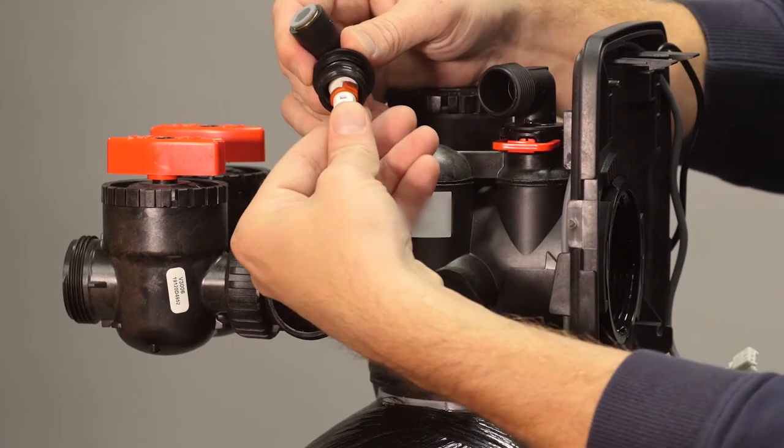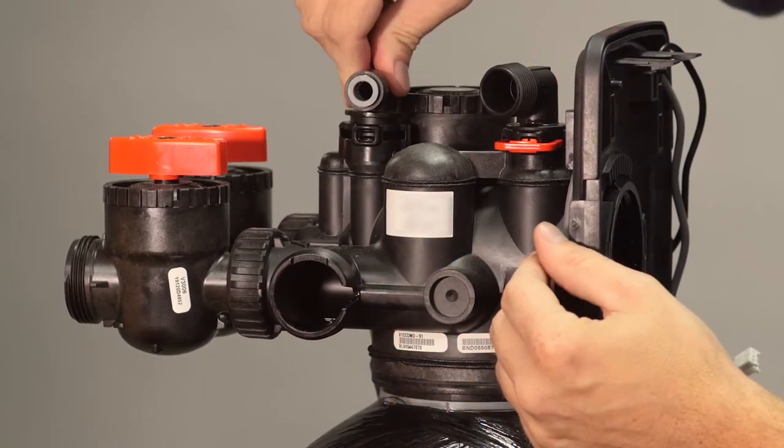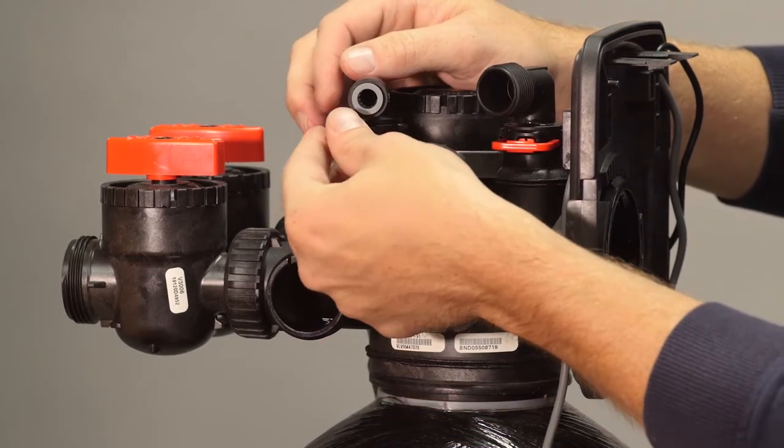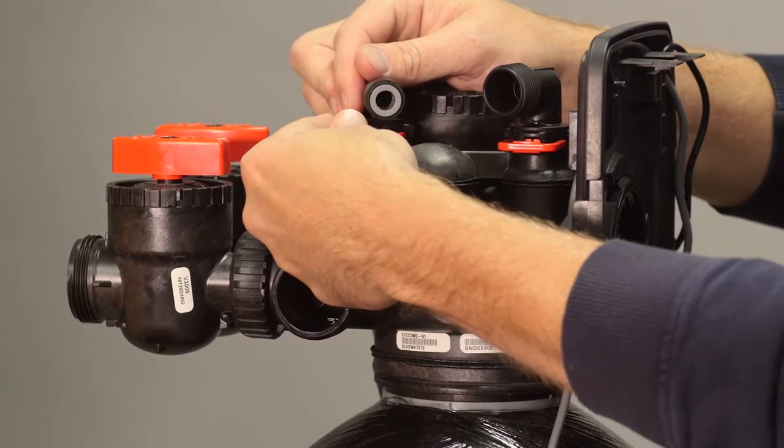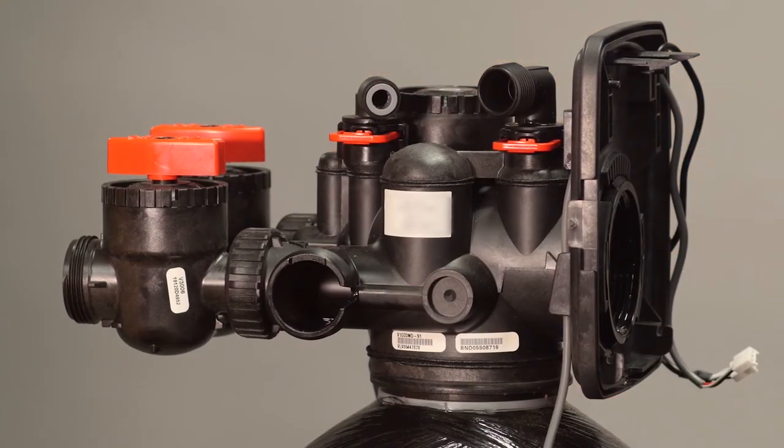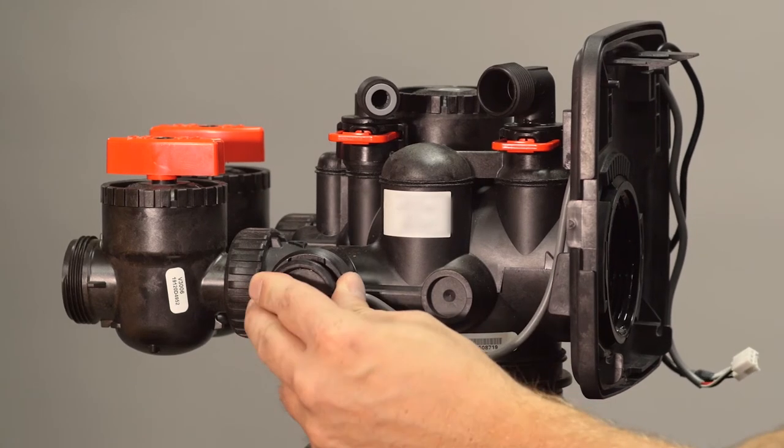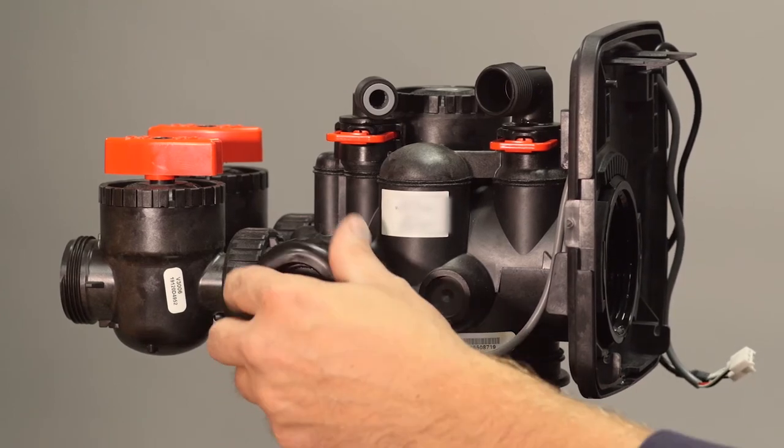Press the refill elbow control retainer into the refill elbow and press the refill L into the valve body. Secure it with the locking clip. Hand tight is usually sufficient.